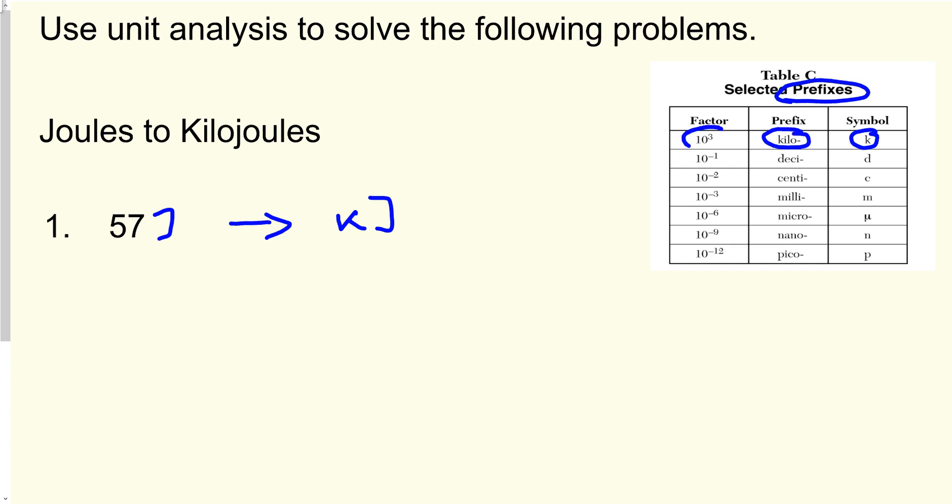The factor for kilo is 10 to the power 3. If the factor has a positive exponent, that means the prefix unit is bigger than your base unit — so kilojoules are bigger than regular joules. If the factor is smaller, like 10 to the power negative 3, negative 6, or negative 9 — milli, micro, nano — that means the unit is smaller than your original base unit.